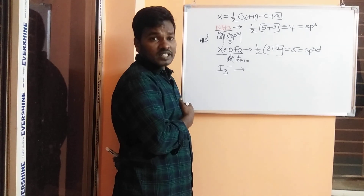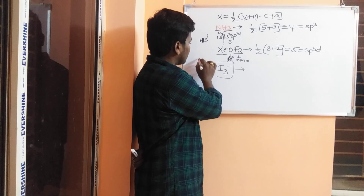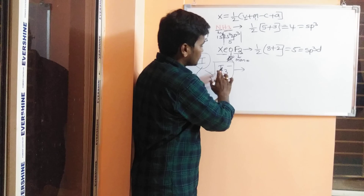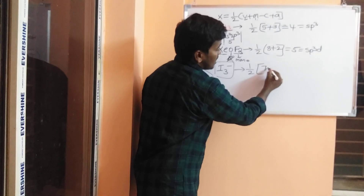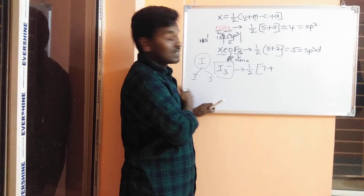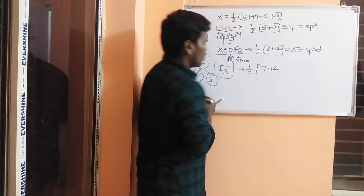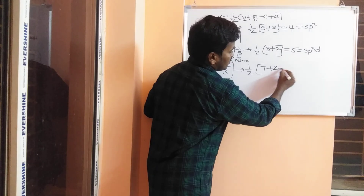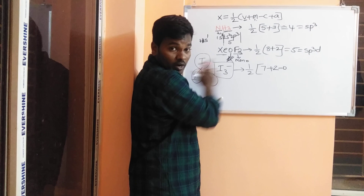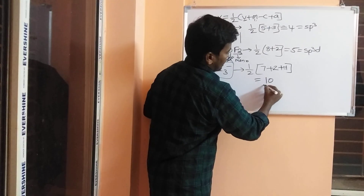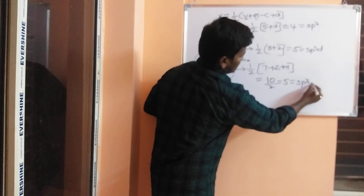Next: I₃⁻. You might think there is no central atom, but out of the three iodines one is the central atom and the other two are attached. The central atom has 7 valence electrons (V equals 7). Iodine is monovalent, and the remaining two iodines are monovalent atoms (M equals 2). There is no positive charge, but there is one negative charge, so A equals 1. One by two of (7 + 2 + 1) equals 5, giving sp³d hybridization.